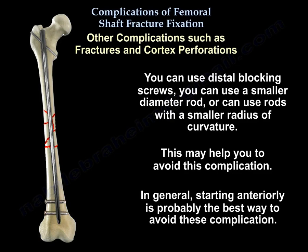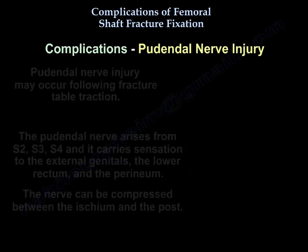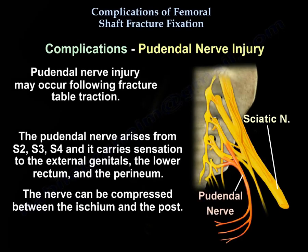In general, starting anteriorly is probably the best way to avoid anterior cortical perforation. Another complication is pudendal nerve injury, especially when using the fracture table and traction. The pudendal nerve arises from S2, S3, and S4, and carries sensation to the external genitals, lower rectum, and perineum. It can be compressed between the ischium and the post during fracture table traction.